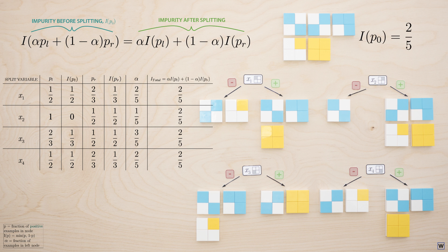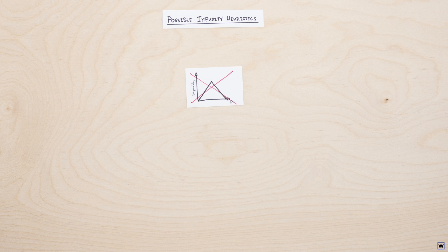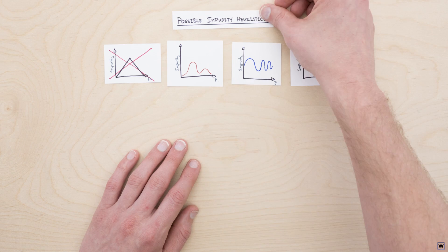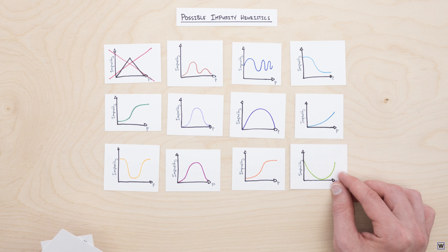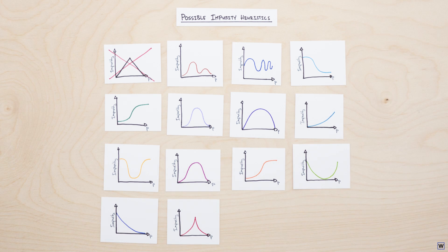We've uncovered our missing link. The linearity of our impurity function means that as long as our majority classes don't flip in any of our nodes, any gains we make on one side of our tree are exactly cancelled out by the other, resulting in the same impurity measure for every split. So what should we do? The linearity of our impurity function seems to be our real issue here, so perhaps we should consider a non-linear impurity function. Just deciding our impurity should be non-linear is not that helpful, because there are quite a few non-linear functions out there, and it seems unlikely that all non-linear functions are good measures of impurity.